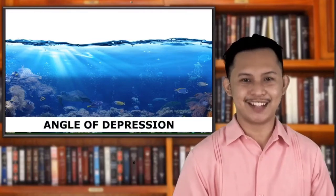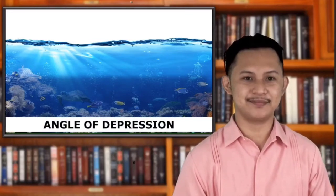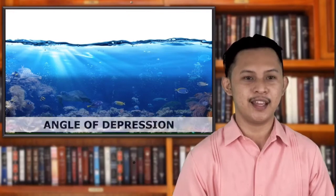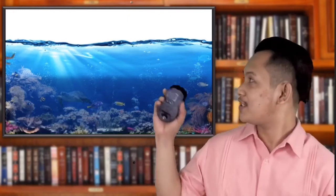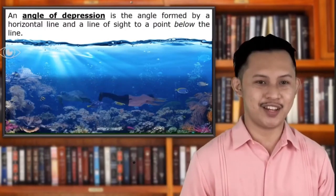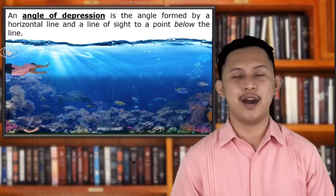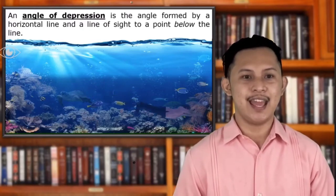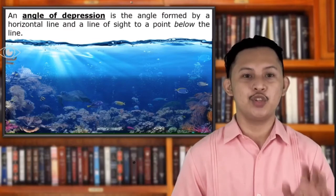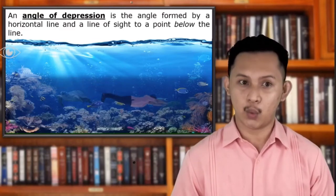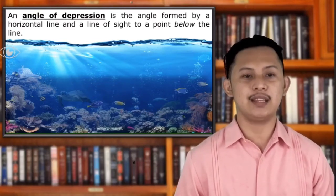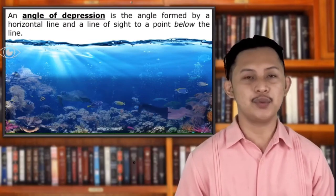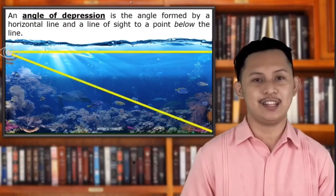Next, this illustration shows an angle of depression. What is an angle of depression? An angle of depression is the angle formed by a horizontal line and a line of sight to a point below the line. Take note — it is below the line. Try to observe the given illustration.